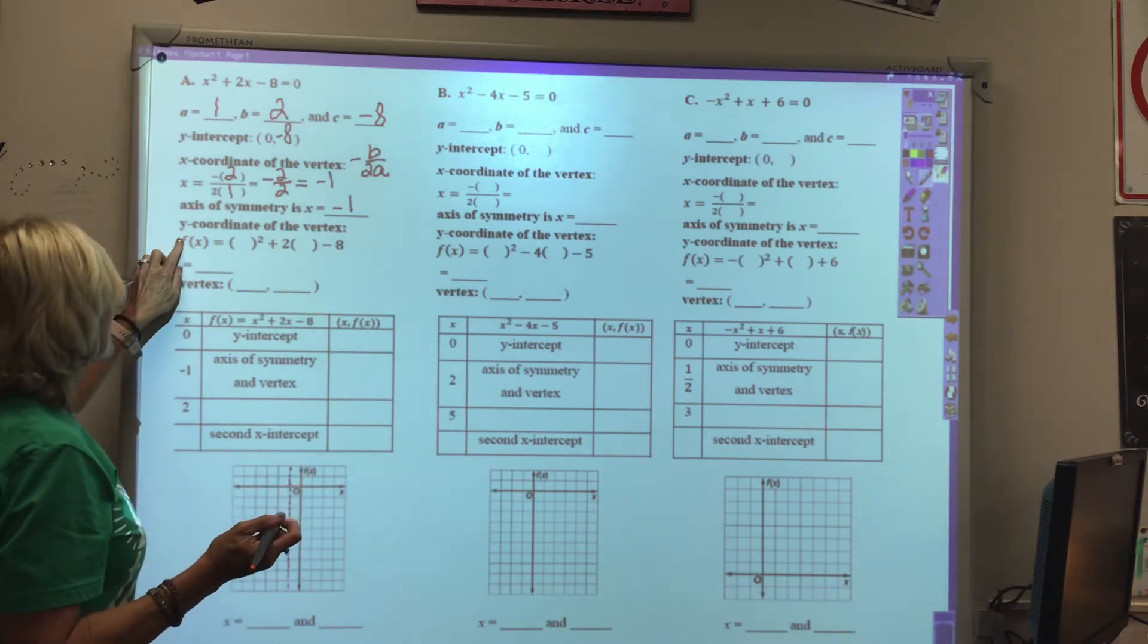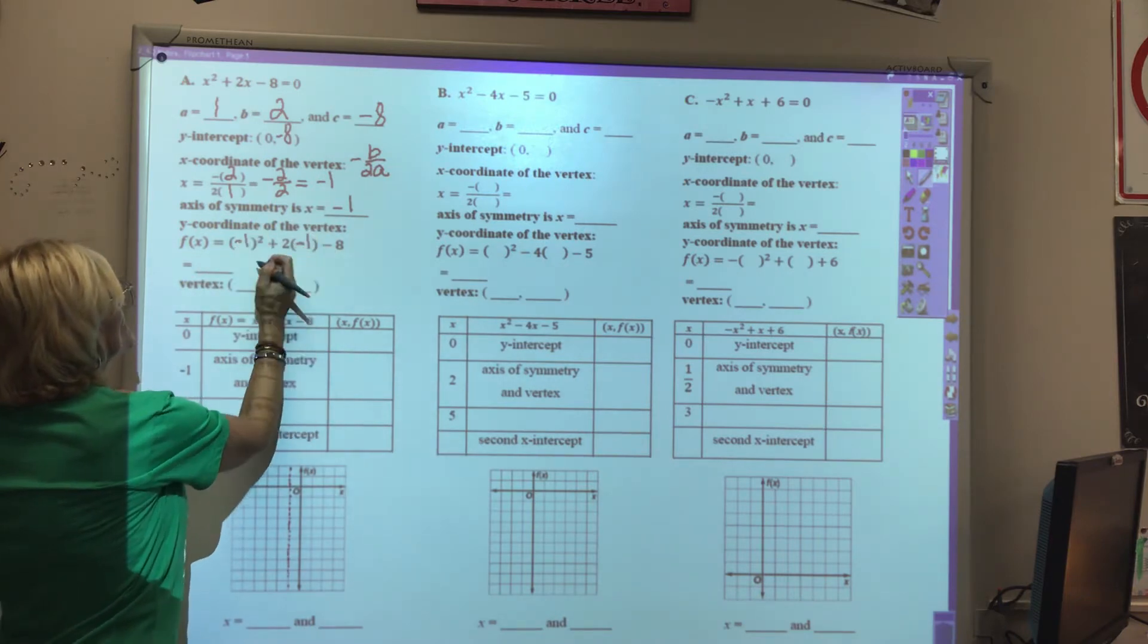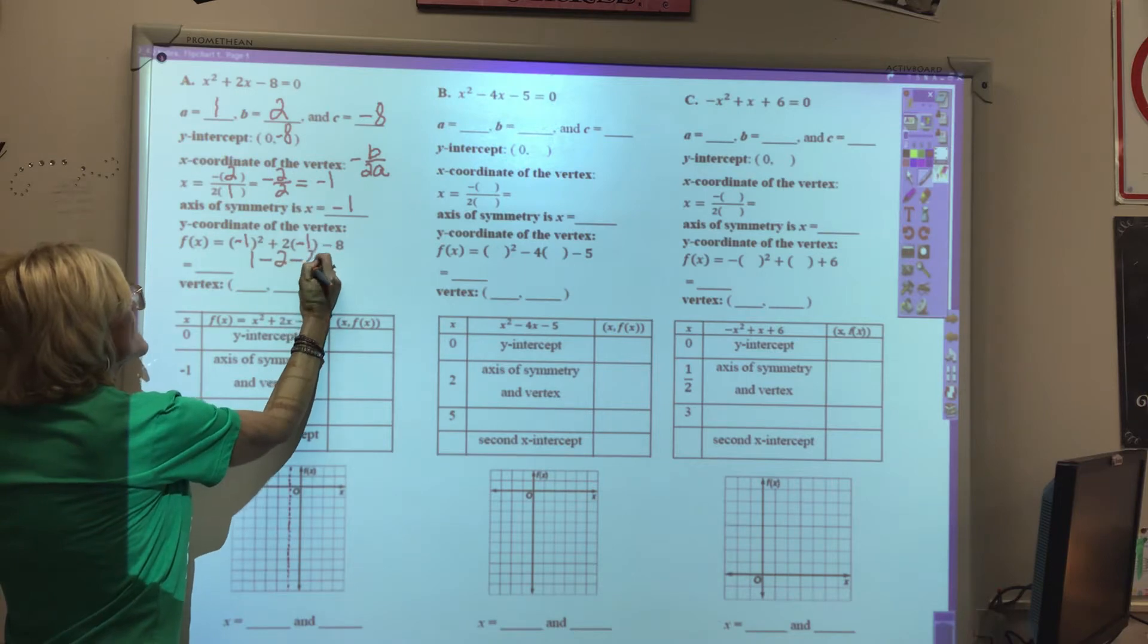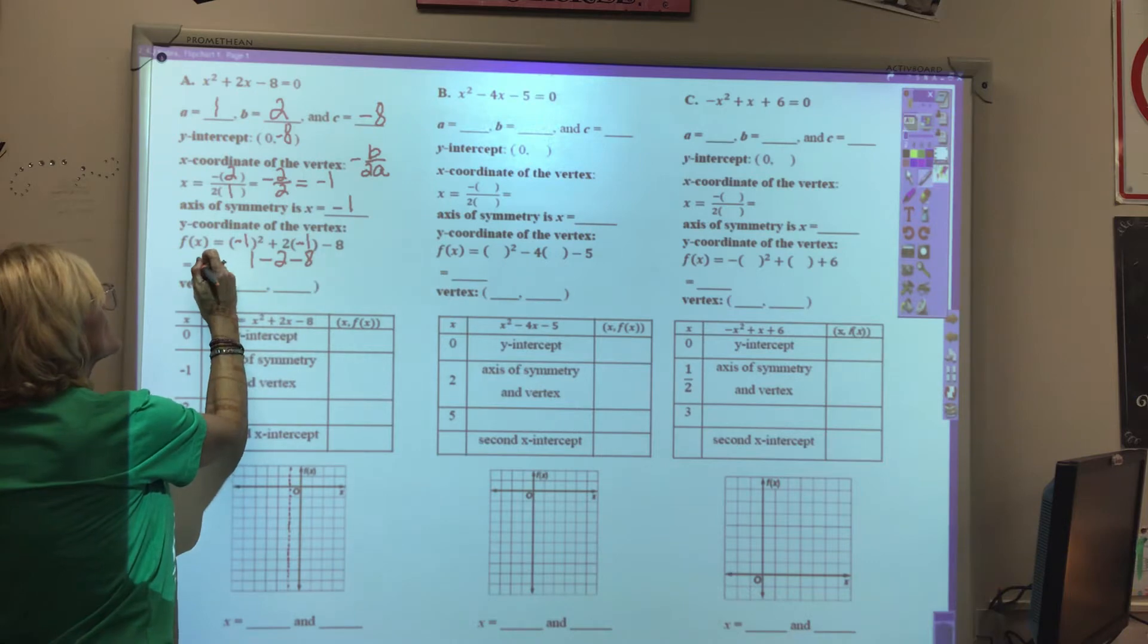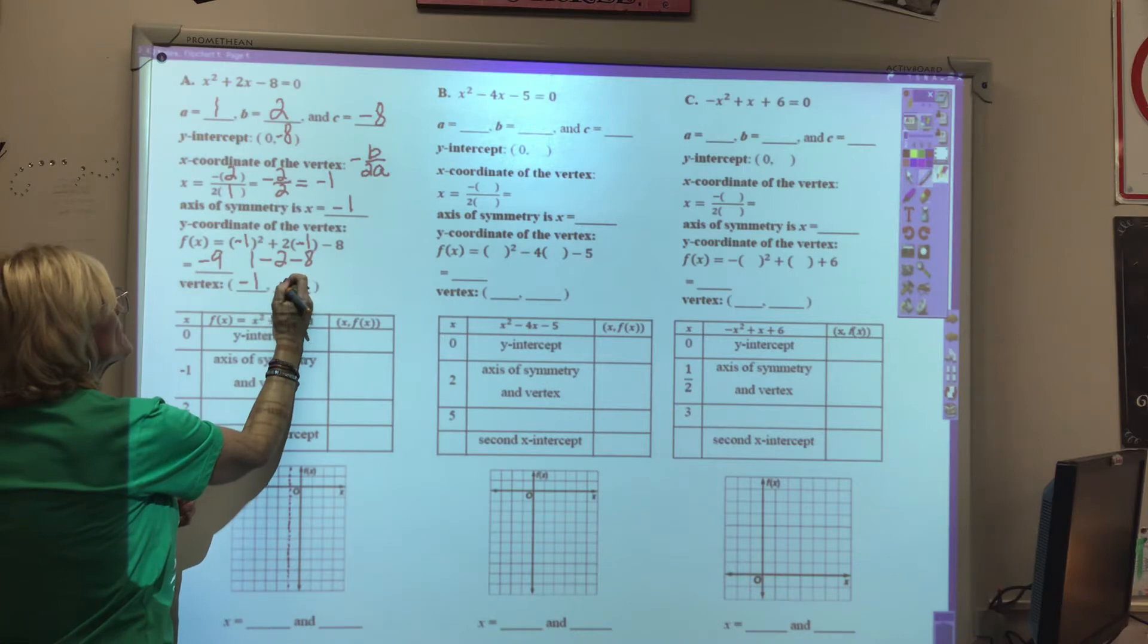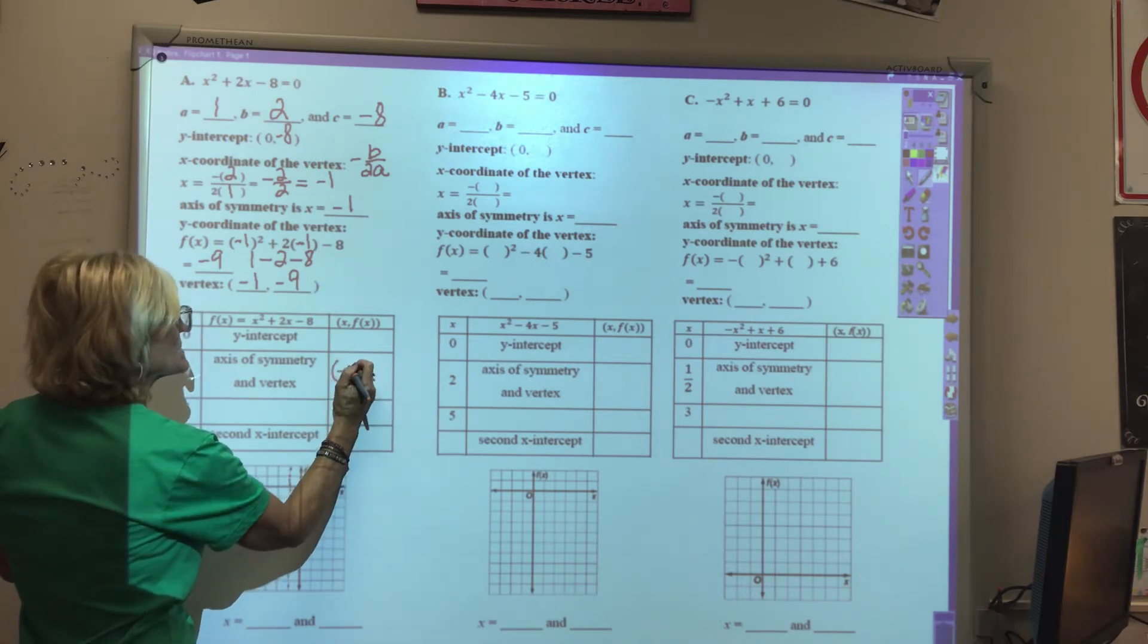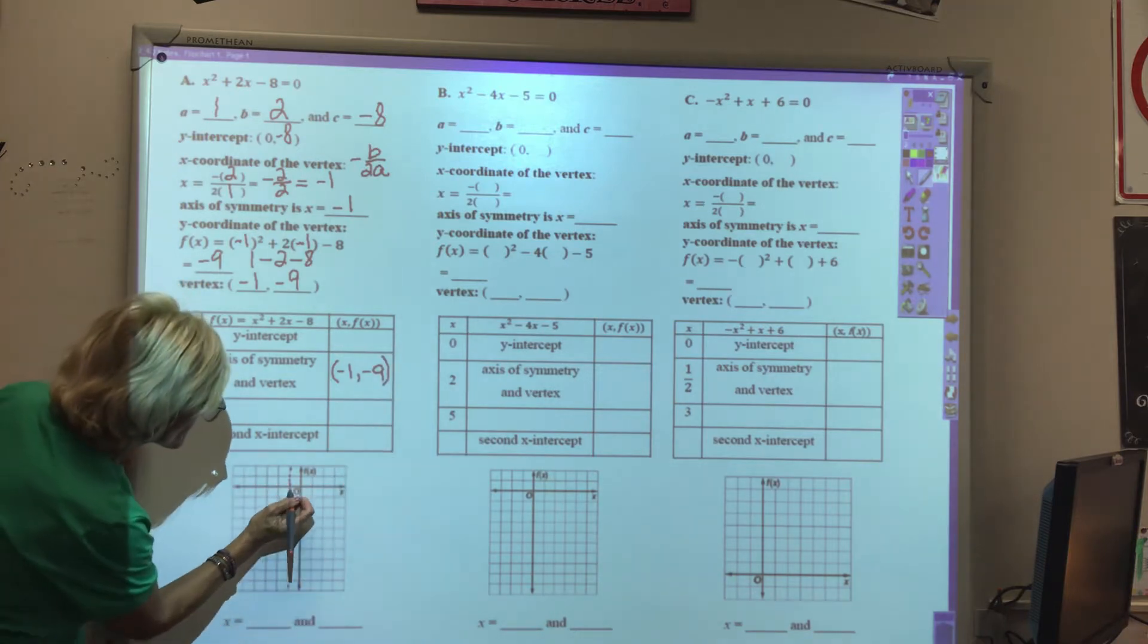The y-coordinate of the vertex, we would plug in a negative 1 into the function. Simplifying, negative 1 squared is 1 plus 2 times negative 1 would be minus 2 minus 8. So 1 minus 2 is negative 1, minus 8 is negative 9. The vertex will be at negative 1, negative 9. We can fill in right here under axis of symmetry and vertex, and we can put the point negative 1, negative 9.